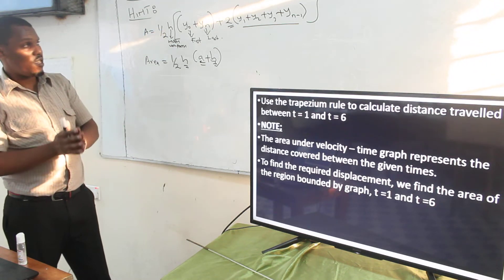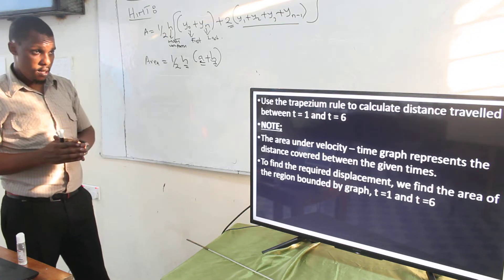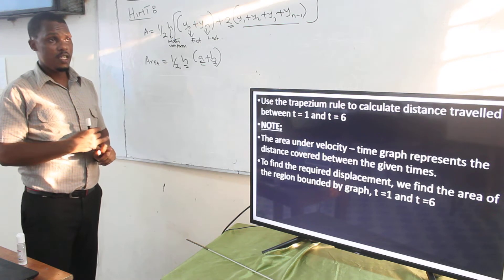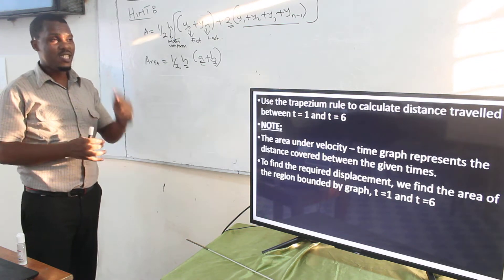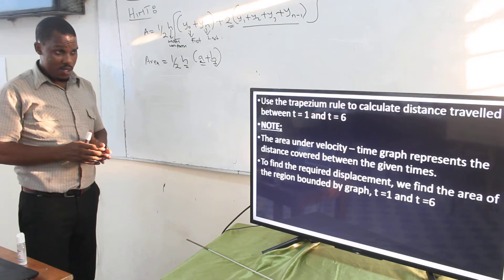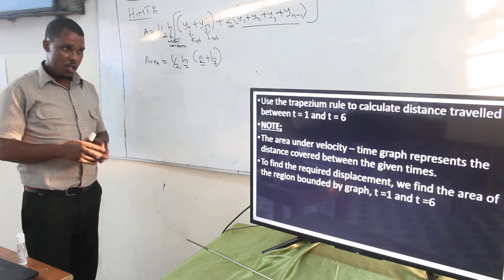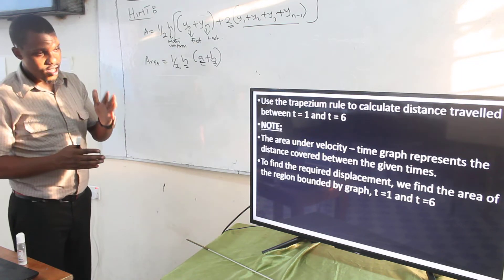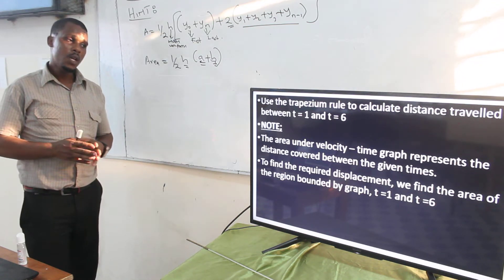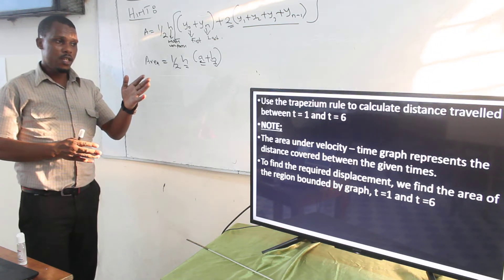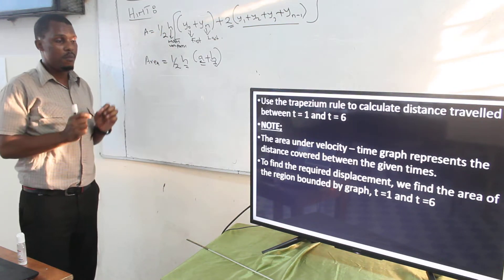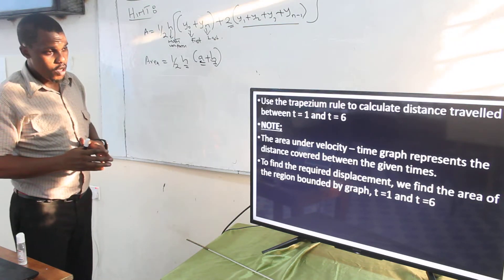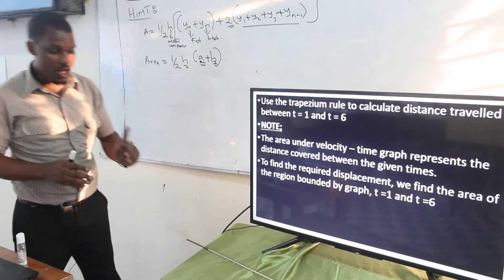The condition specifies you use the trapezium rule. In an example I will be telling you which method to use. Remember, if I tell you to use the trapezium and you decide to use the mid-ordinate, you will lose marks. So you have to stick to what you have been told. In this case, you are told to use the trapezium rule to calculate the distance travelled between t = 1 and t = 6. You are not considering from t = 0, but from t = 1 up to t = 6.